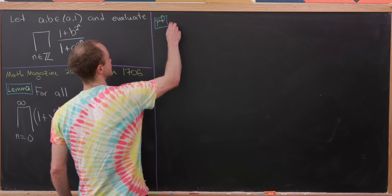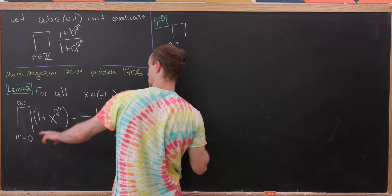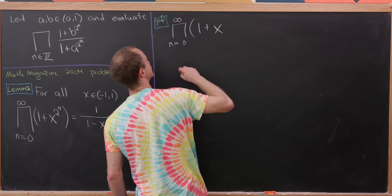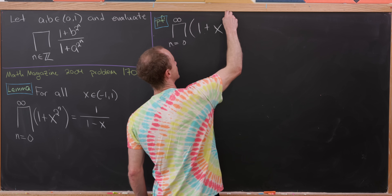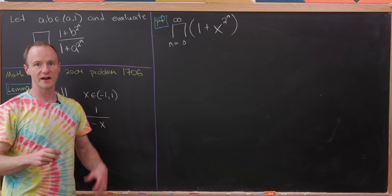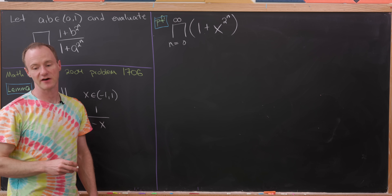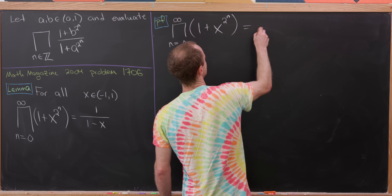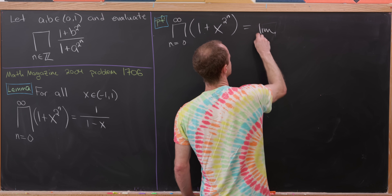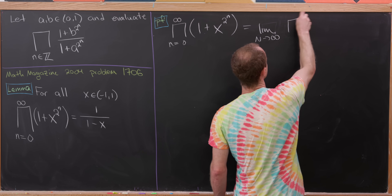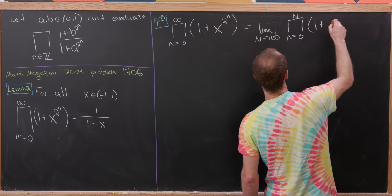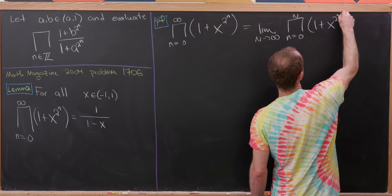Let's look at the proof of this. I'm going to rewrite the left-hand side — this product as n goes from 0 to infinity of (1 + x^(2^n)). The way to think about an infinite product is as the limit of partial products. So let's rewrite this as the limit as capital N goes to infinity of the product as little n goes from 0 to capital N of (1 + x^(2^n)).